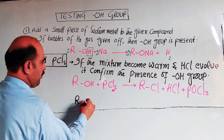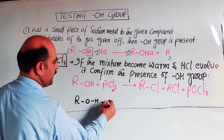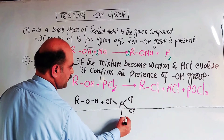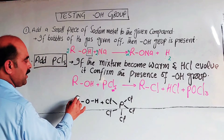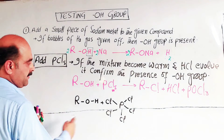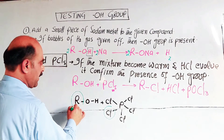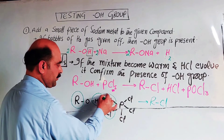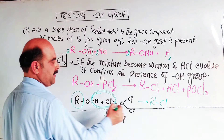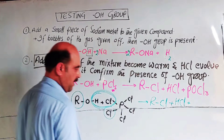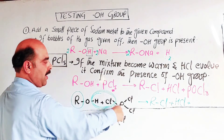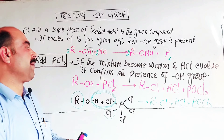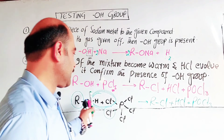The reaction is: ROH plus PCL5 gives alkyl halide (RCl) plus HCL plus POCl3 (phosphorus oxytrichloride). This confirms that the given compound contains an OH group and is an alcohol. That was test number two.